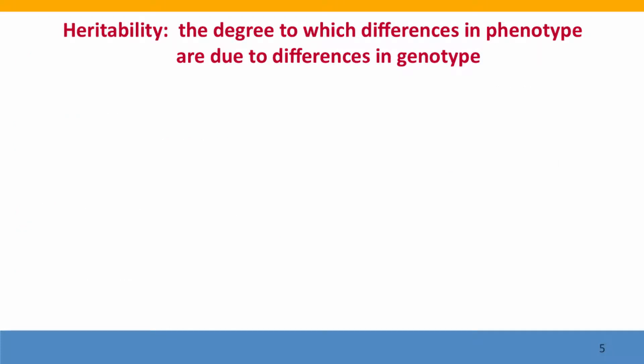Now I want to think back to the concept of heritability, which we introduced in lecture 3 and lecture 5C. We defined heritability as the degree to which differences in phenotype are due to differences in genotype. We won't be able to discuss how we measure heritability until part 2, but there are components we need to think about now — specifically, the extent to which our measurement of heritability depends on the population and the environment.